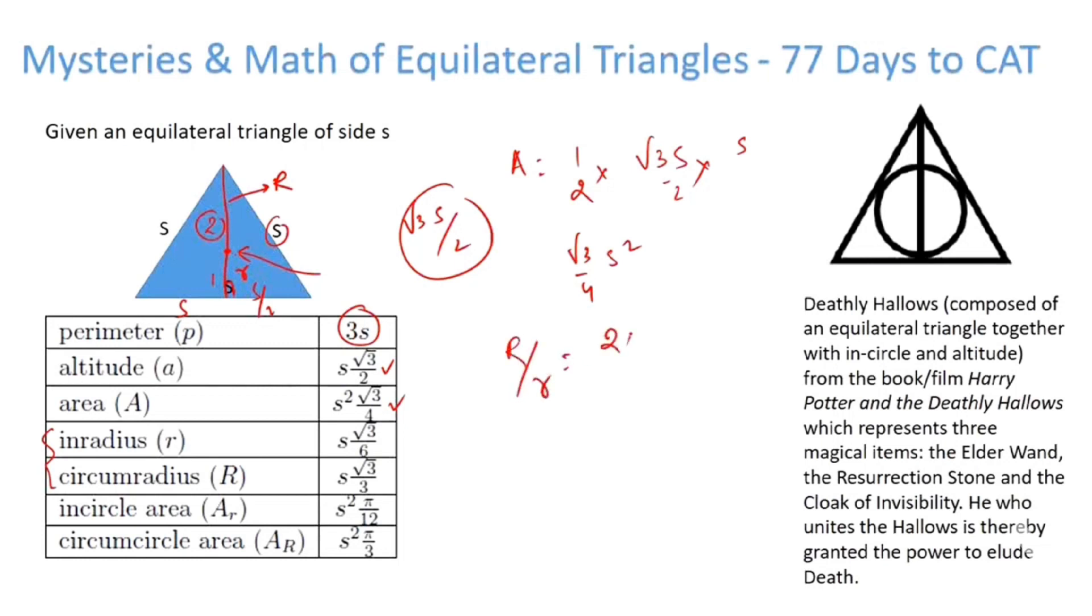So capital R to small r is 2 is to 1, and sum of capital R and small r is equal to the height, which is root 3 S by 2. Hence we can very easily calculate capital R, which is circumradius, which is given as S into root 3 by 3, which is basically S upon root 3. And we have inradius as S upon 2 root 3. I hope this is clear to you. So inradius and circumradius are also known.